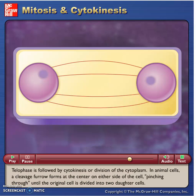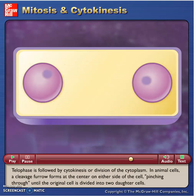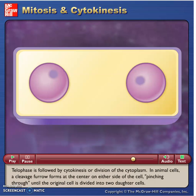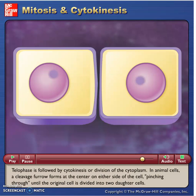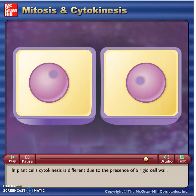Telophase is followed by cytokinesis, or division of the cytoplasm. In animal cells, a cleavage furrow forms at the center on either side of the cell, pinching through until the original cell is divided into two daughter cells. In plant cells, cytokinesis is different due to the presence of a rigid cell wall.